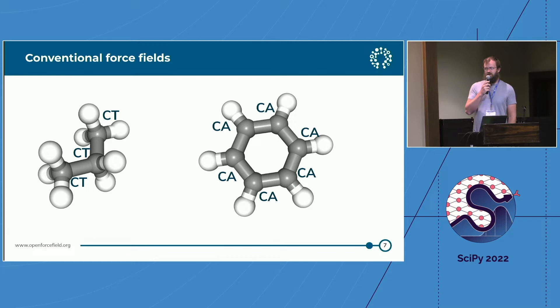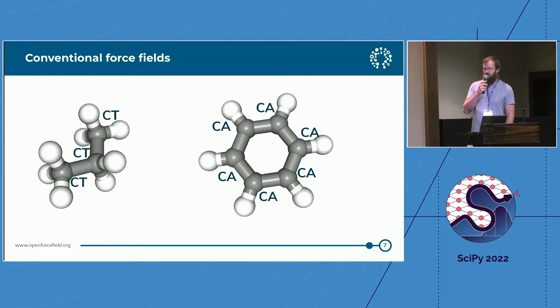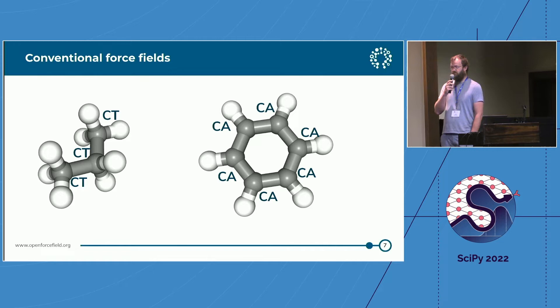Going back to maybe the 80s, but certainly a few decades now, the conventional approach was to use atom types. If we take two simple molecules — propane and benzene — and look at the carbons, we could say the carbons in propane are aliphatic and probably similar enough to hexane, so let's create an atom type called CT. On benzene, the physics is different, so let's make a different atom type: CA. CA and CT are going to have different parameters.